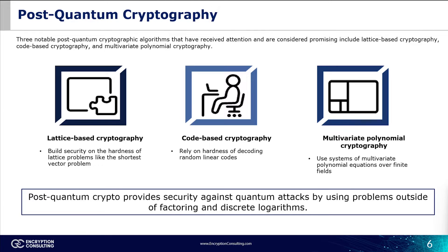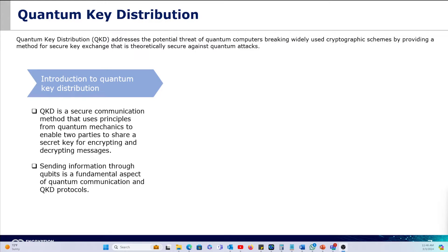Post-quantum cryptography introduces a new arsenal of algorithms and mathematical challenges designed to be so complex that not even the most sophisticated quantum computers can unravel them. The concept of stored-now, decrypt-later attacks is a growing concern — your current encrypted data, seemingly secure, could potentially be decrypted in the future by advanced quantum machines. To combat this, the tech community is pioneering new cryptographic frontiers: post-quantum cryptography and quantum key distribution.